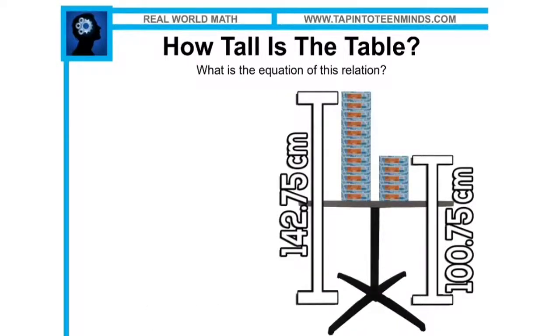So today in class, students were provided with the following information. They had the height of a stack of paper on the left, where there are 12 stacks of paper total, and that height was including the height of the table. So the height from the floor all the way to the top of that stack of 12 papers is 142.75 centimeters.